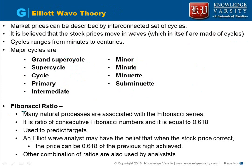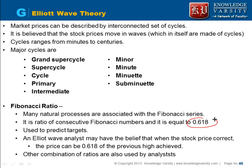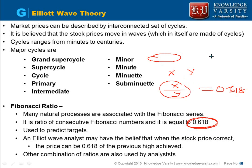Elliott Wave theory uses Fibonacci ratios extensively. Many natural processes in the world are associated with the Fibonacci series — for example, leaf sizes and the length of certain insects. The Fibonacci ratio is the ratio of consecutive Fibonacci numbers, which equals 0.618. For two consecutive Fibonacci numbers x and y, x divided by y equals 0.618. Note that for initial numbers this doesn't hold, but over the long term the sequence converges.